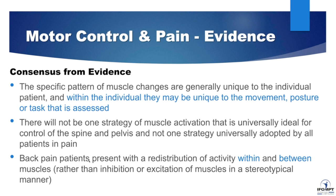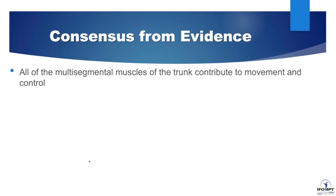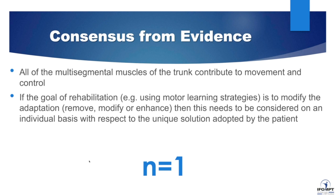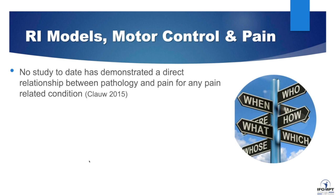This is where the evidence is now. All the muscles of the trunk contribute to movement and control, and if our goal in rehab is to modify the motor control strategy in order to distribute loads more effectively, the evidence supports that we have to consider this on an individual basis with respect to what is needed by that individual patient. This is the problem with RCTs that attempt to identify an approach to low back pain — there isn't going to be a treatment intervention or exercise program that fits everyone. We're back to N=1. We're back to looking at the individual patient and having ways to identify what's right for them.